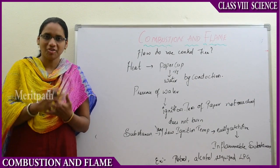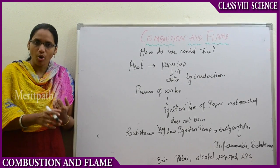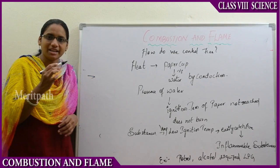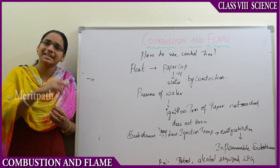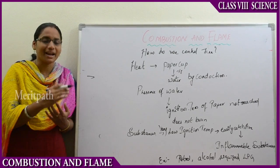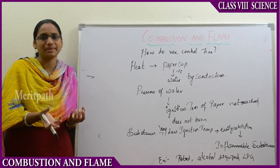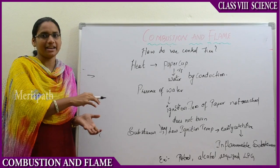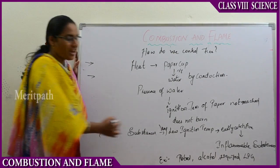Now let us see how to control fire. Fire accidents occur frequently in homes, industrial areas, and surroundings. These accidents occur due to gas burns, mistakes, or accidental catching of fire. We need to know how to control, prevent, and safeguard lives when a major fire accident occurs. We will discuss the major steps to take, beginning with the term known as inflammable substances.